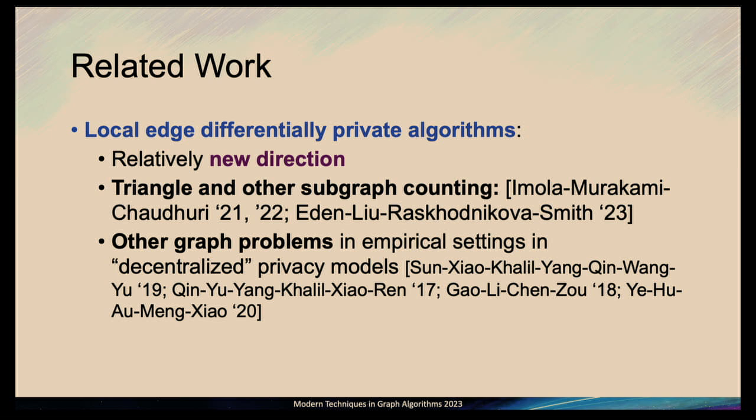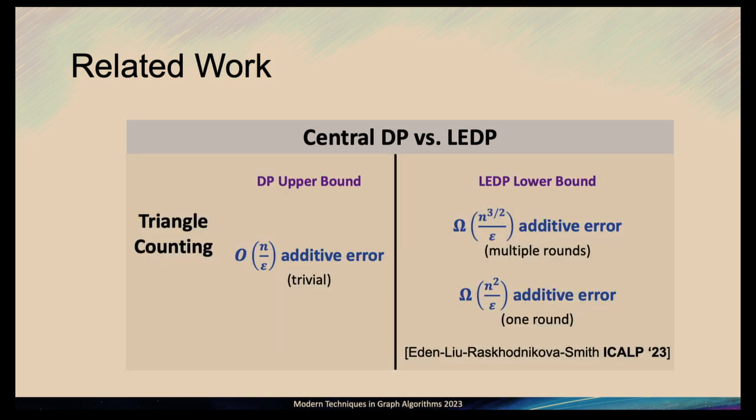This is a very understudied model of privacy for graphs — this slide shows all previous work on this model, and the only theoretical works besides ours are a small set. Specifically, all other works have focused on triangle counting. The problem with triangle counting is that there is at least a polynomial-size gap in error between the central model and the local model. For the central model there's a trivial algorithm achieving O(n/ε) additive error, but for the local model we showed that in the interactive multi-round case you need at least n^(3/2)/ε additive error, and with only one round the error becomes quadratic.